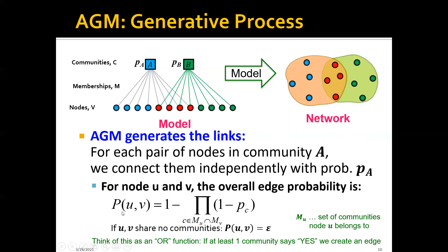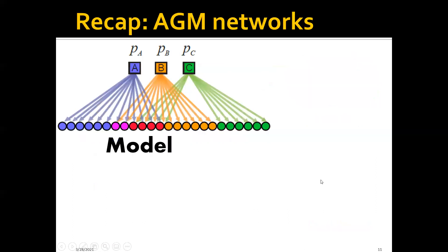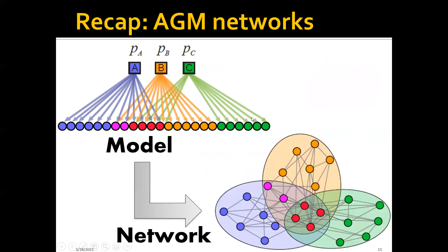There is a small corner case: if nodes U and V share no communities, we set the probability of an edge to be epsilon. Given these parameters, we can generate the edges one by one. In this way, given any affiliation graph model, we will be able to generate a network according to this model.